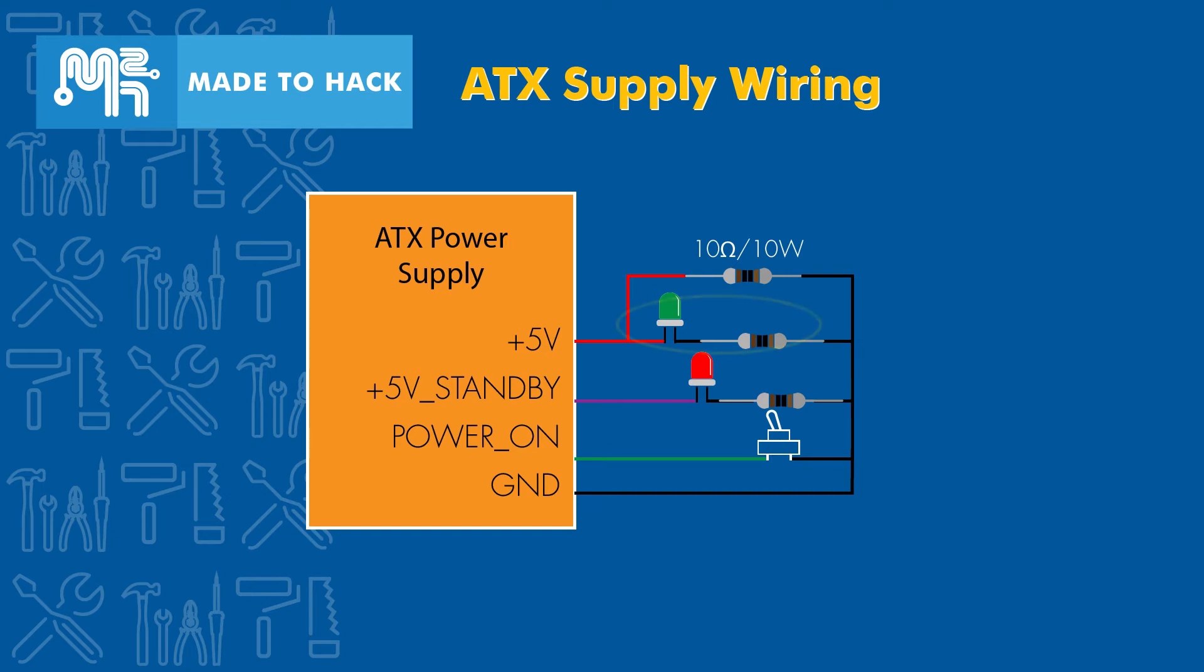I then also connected a green LED between 5 volts and ground. This LED turns on when you flip the small power switch and it shows that all the power rails are activated.